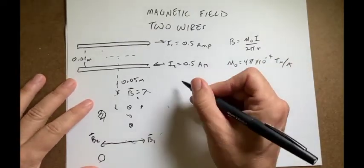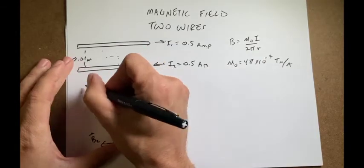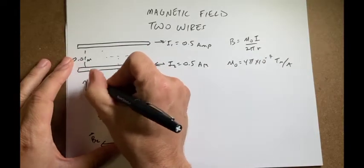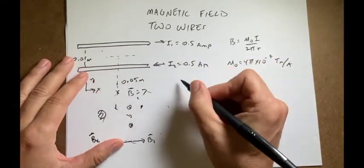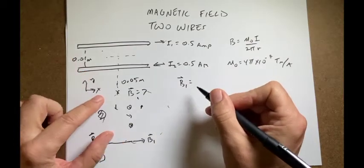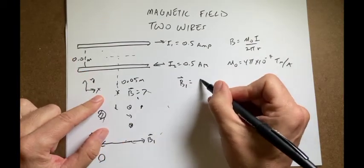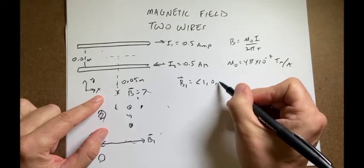Okay, so let's just write this down as vectors. So if I call this the x and the y direction, then let's find B1. It's going to be in the x direction. So I can go ahead and write 1, 0, 0.